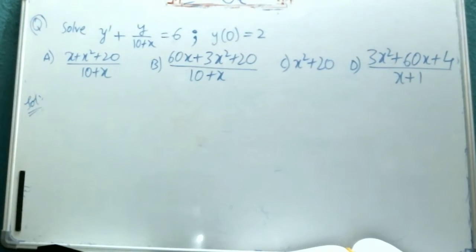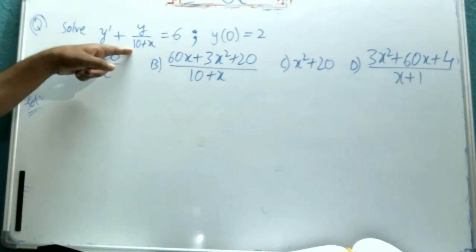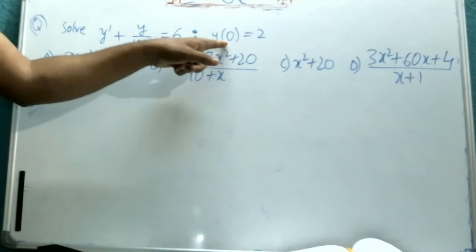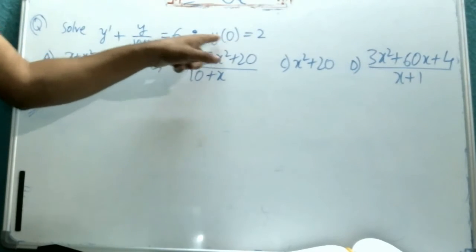In the question he is asking to find out the solution for y dash plus y by 10 plus x equal to 6, where y of 0 is 2. That means when x equal to 0, y is 2.